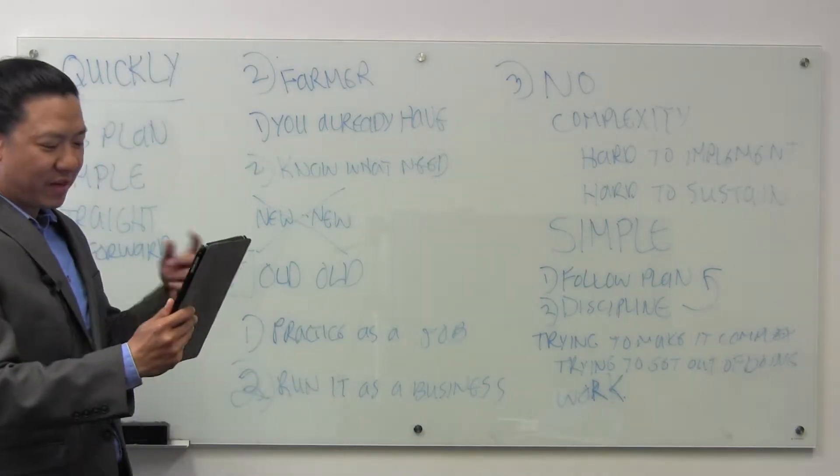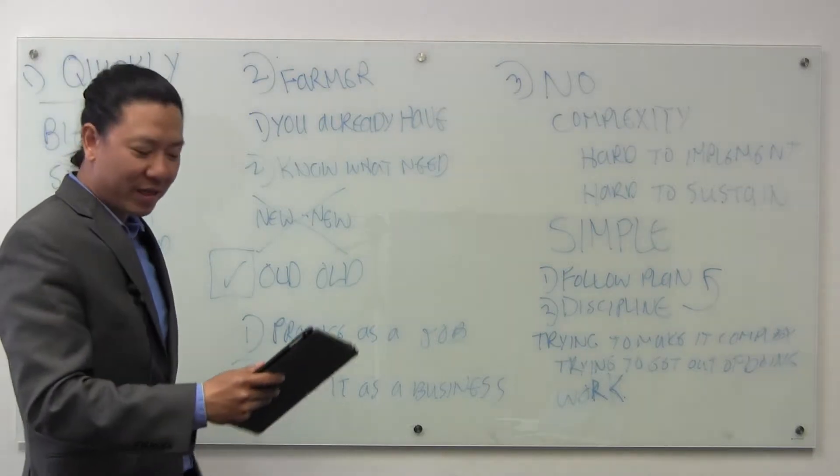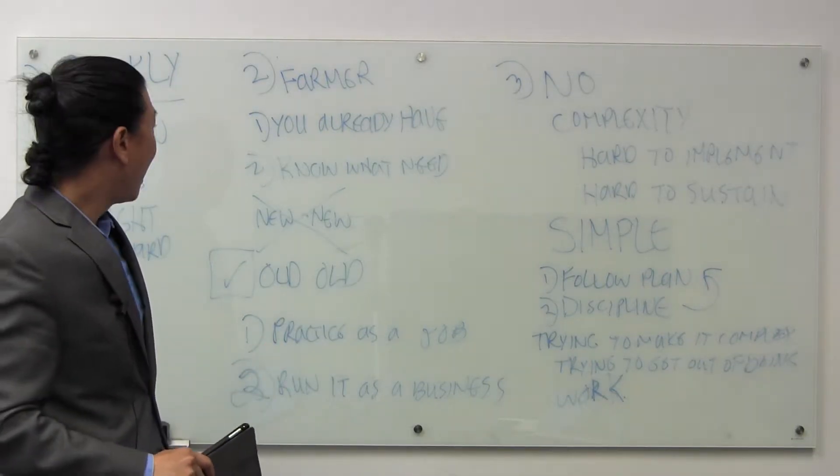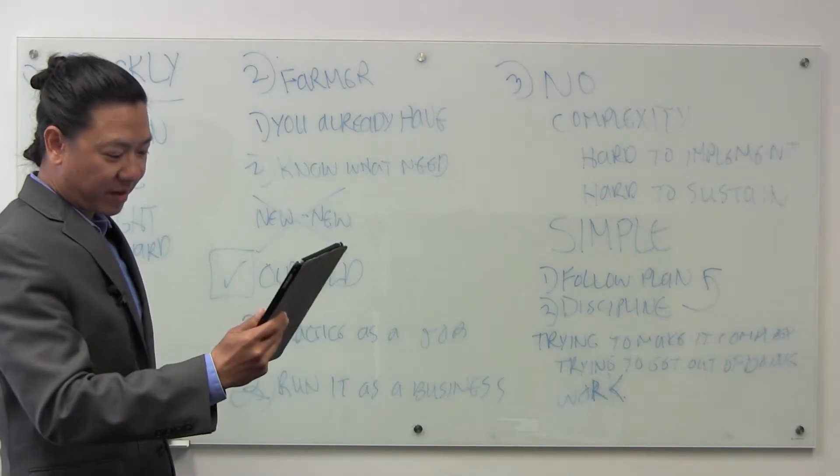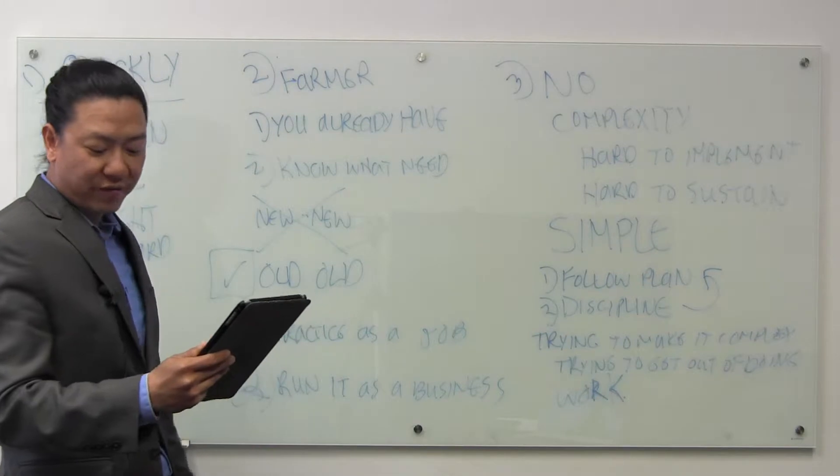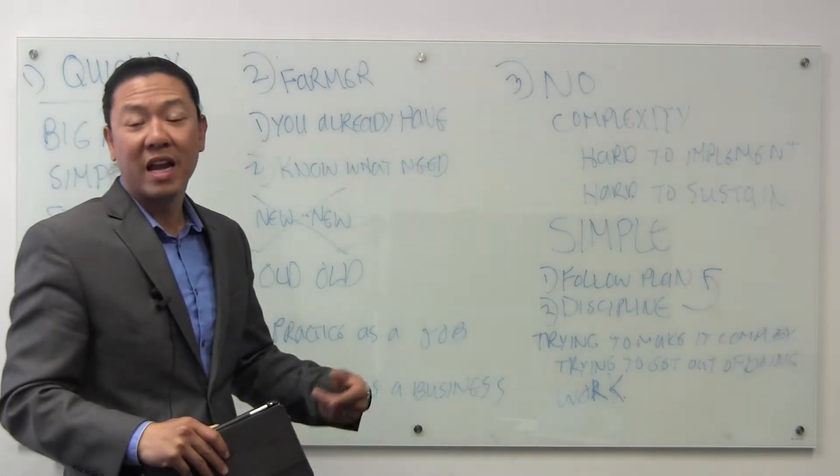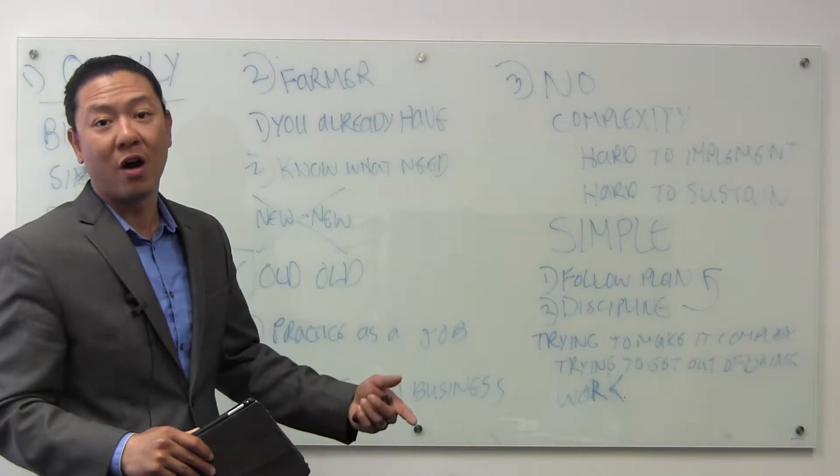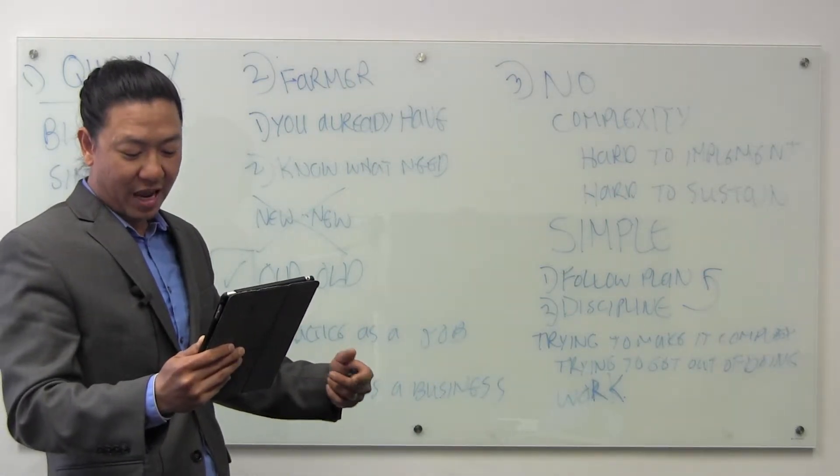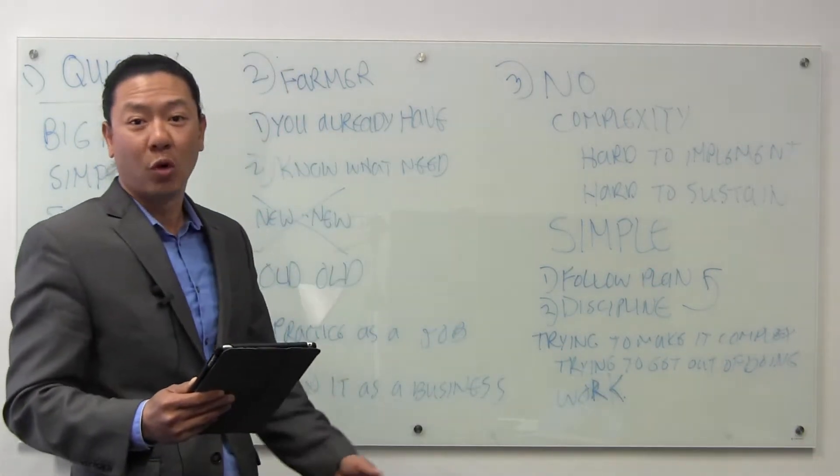Number two is that he told about the book Acres of Diamonds. Russell Conwell tells us the tale of two farmers. The first farmer sells his farm to the other so he can go in search of diamonds. The story ends with the first farmer never finding the diamonds and the new farmer finds acres of diamonds out in the farm that the first farmer sold to him.